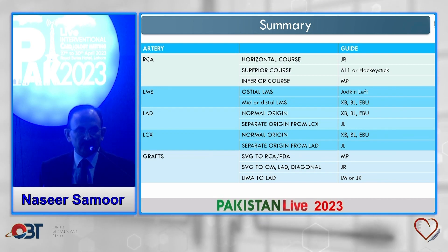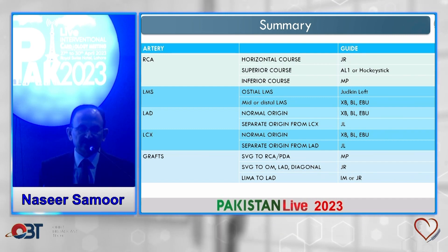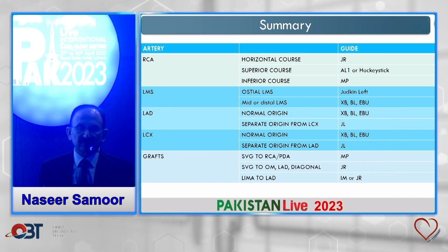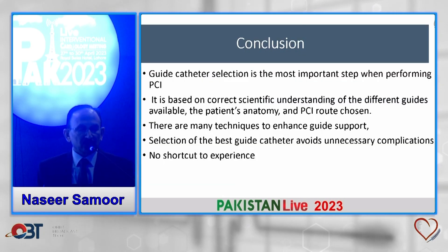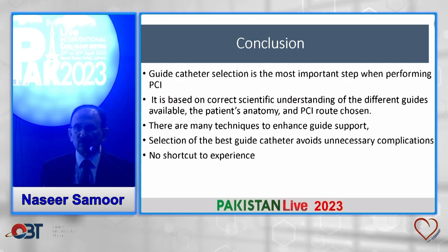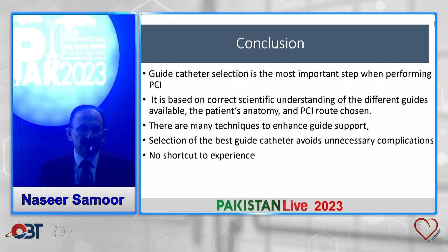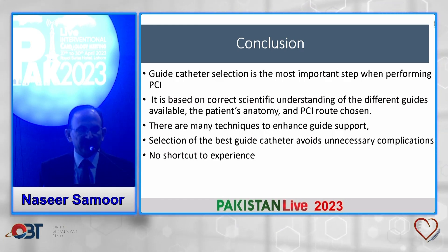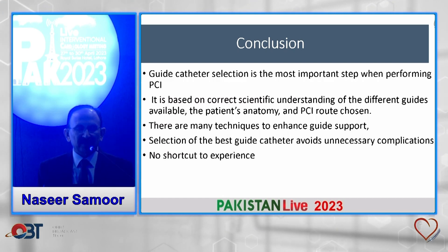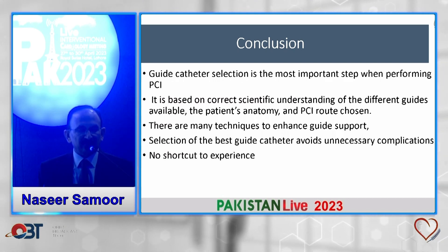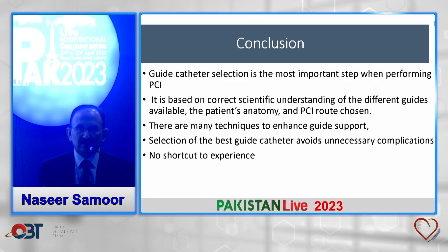This is a summary of the different catheters required for different arteries and locations, with multiple options covered. To conclude, guide catheter selection is one of the most important steps in performing angioplasty. It is based on a correct scientific understanding of different guides available, the patient's anatomy, and the PCI route. Many different techniques exist to enhance guide support, and selection of the best guide prevents unnecessary complications.